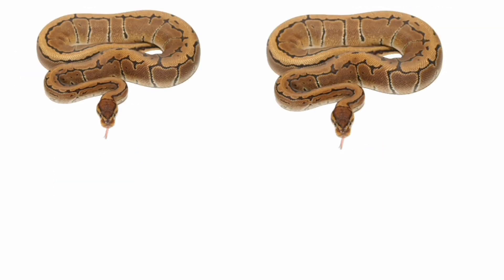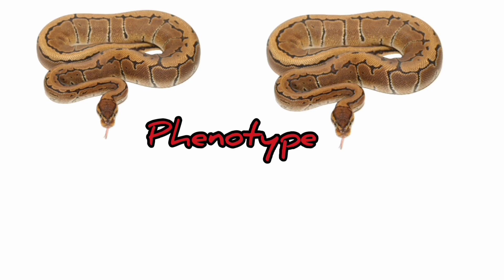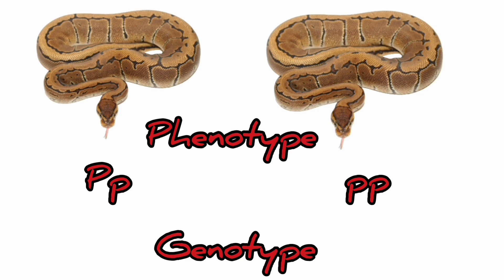Since these two animals are identical in appearance, we have said that they have the same phenotype. A phenotype is a set of observable characteristics that an animal has. Although they look the same, their genetics are different. This is what we call their genotype. Genotype refers to the animal's genes, rather than just what we can tell by simply looking at the animal.